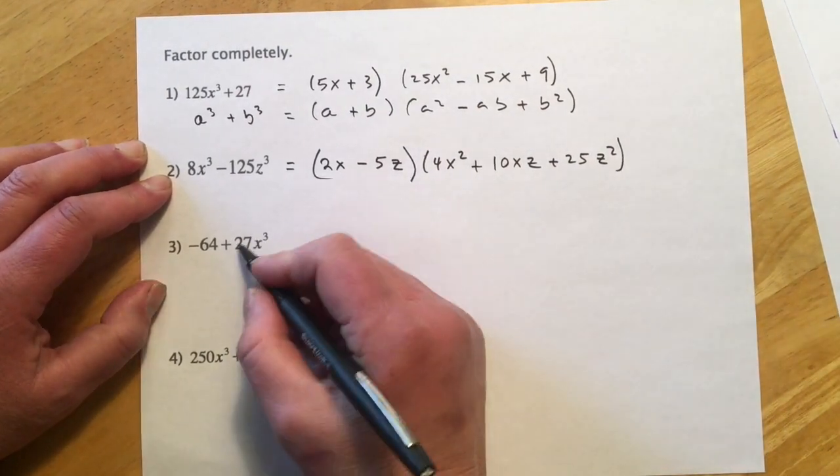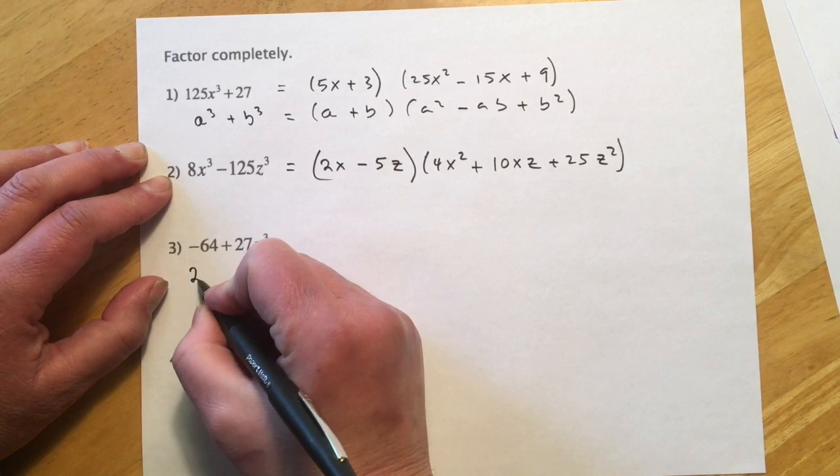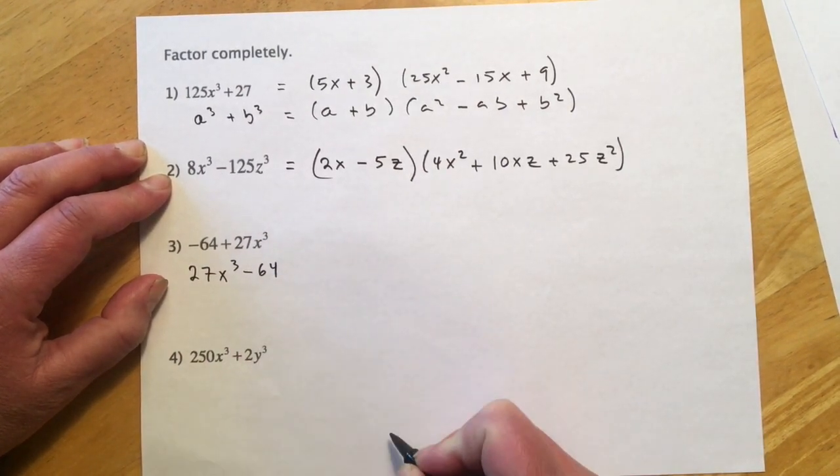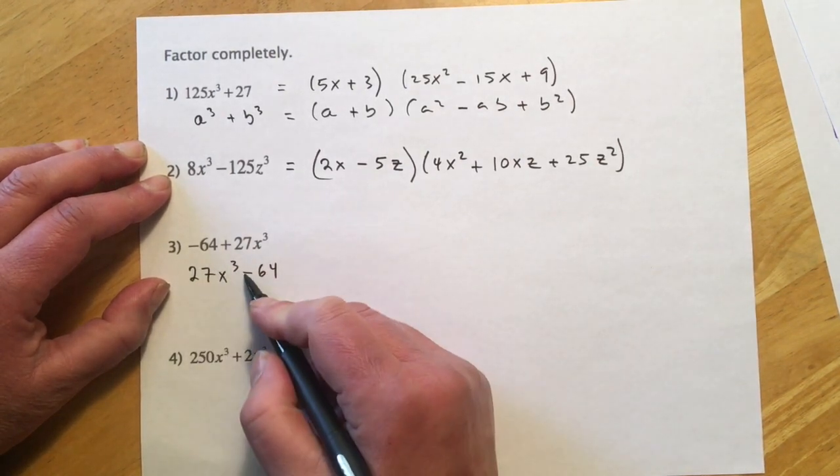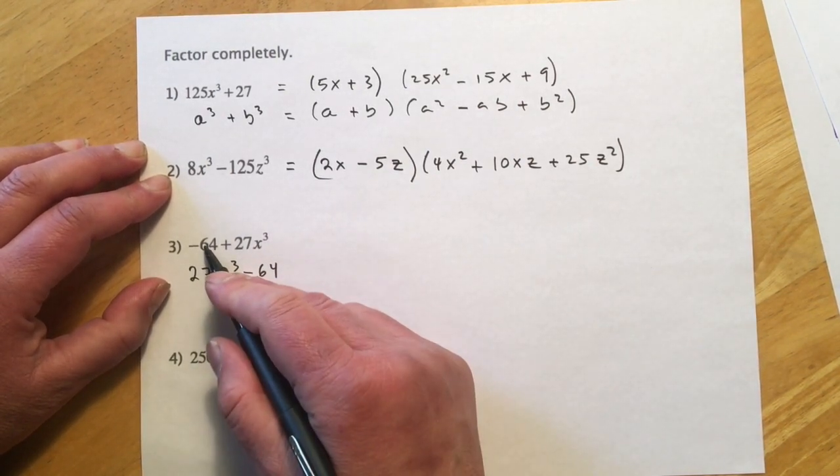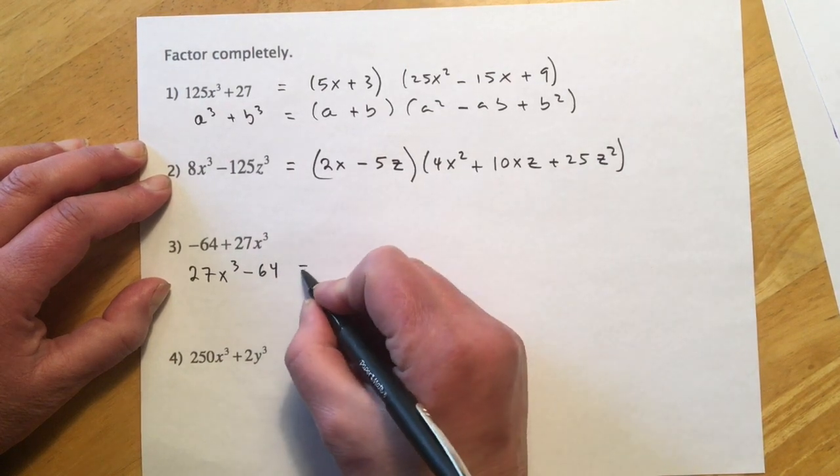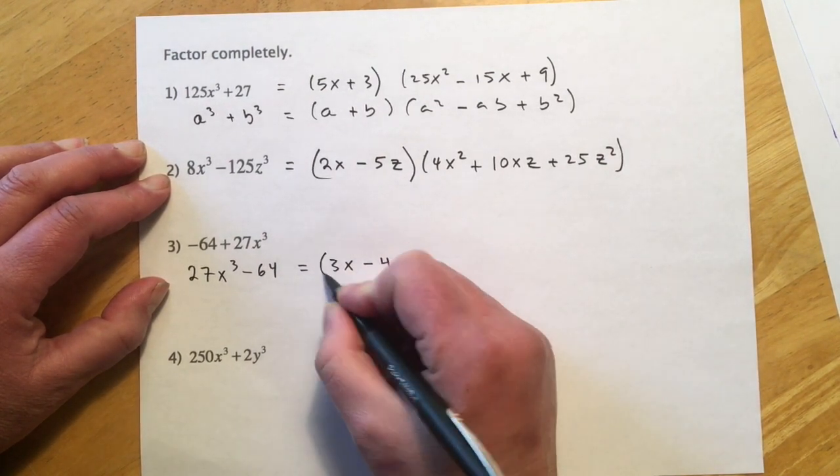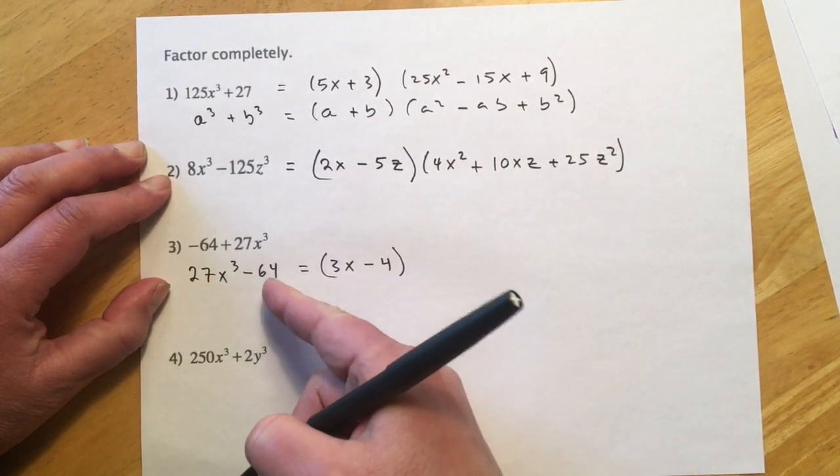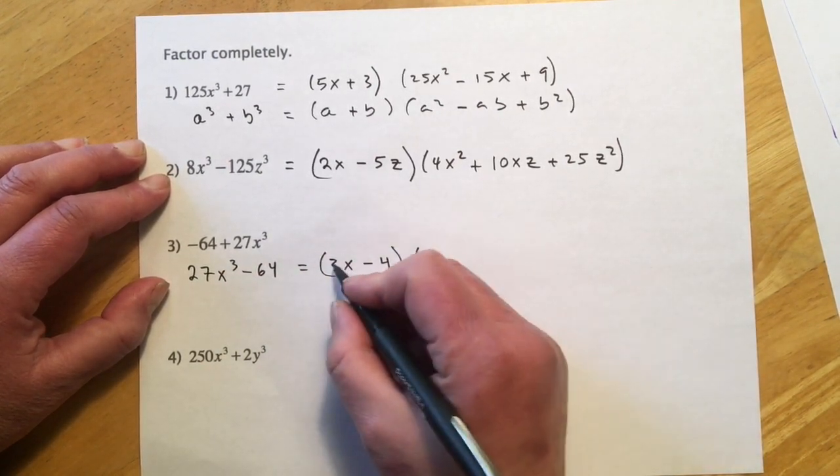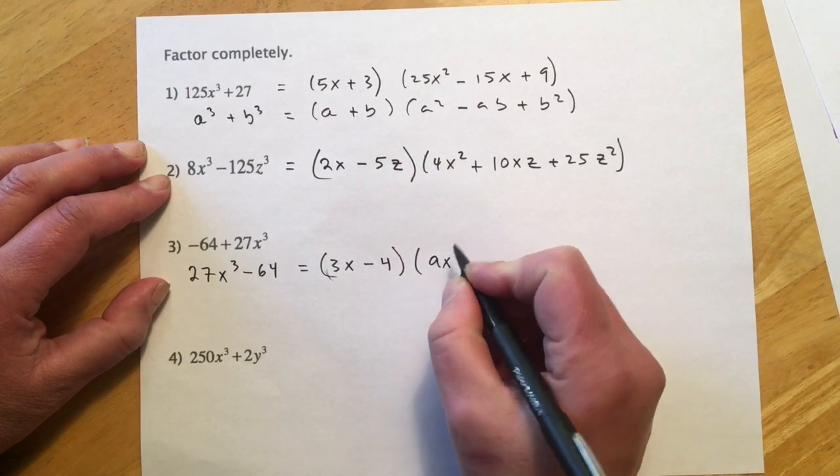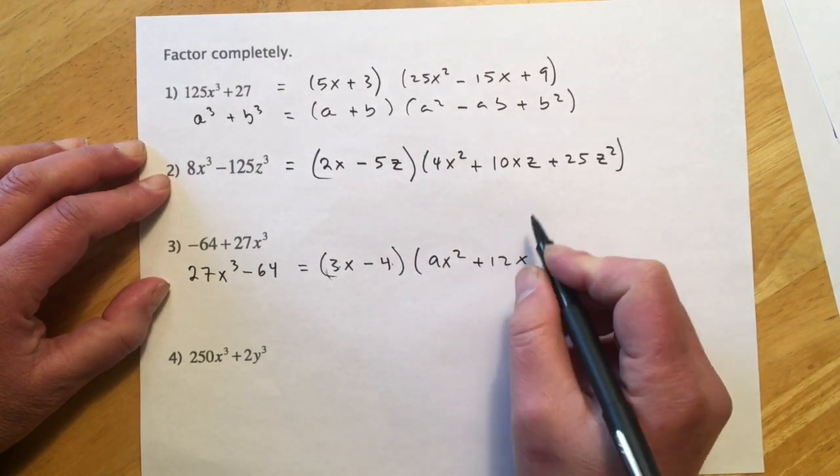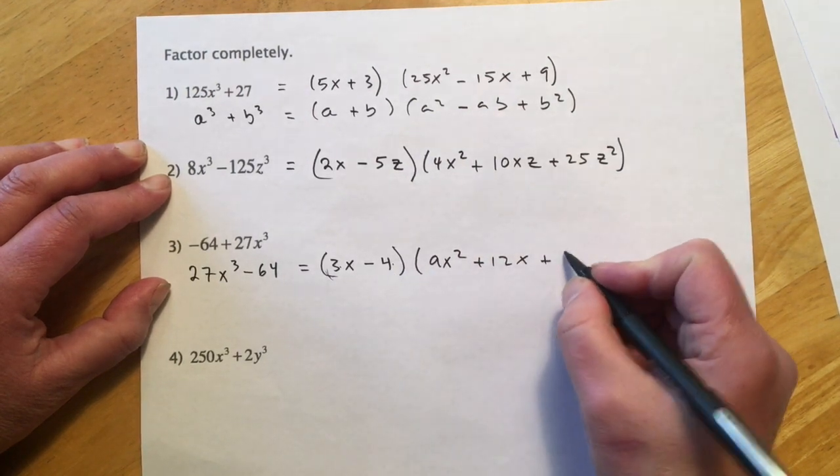This one, so the deal here, it's just written backwards, so if you change it around to this, it makes way more sense. Because the b is supposed to be the negative one, so if you just write it in the other order, it's much easier. So this will go 3x and then minus 4, 27 breaks down to 3, 64 breaks down to 4. And then just square this and get 9x², multiply them together and get 12x, and then 4 times 4 for 16.